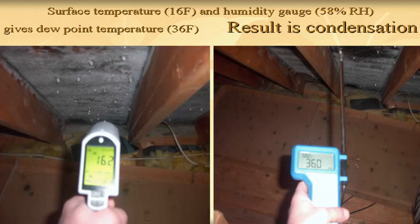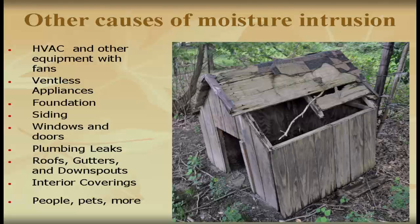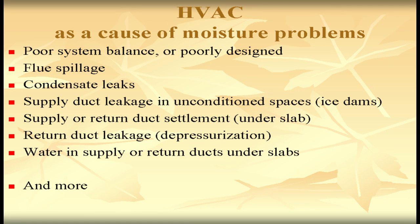Other causes of moisture intrusion include: HVAC equipment, ventless appliances, foundations, siding, windows, doors, plumbing, leaves, roofs, gutters, downspouts, interior coverings, and people. HVAC as a moisture condition can be caused by poor design, poorly balanced systems, flue spillage, condensation leaks from the air conditioner, supply duct leakage in unconditioned spaces such as attics or crawl spaces — and even water in supply or return ducts under slabs.